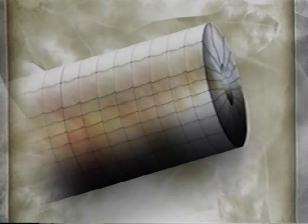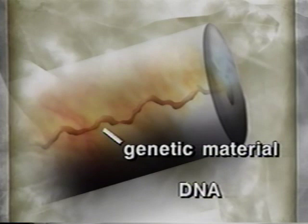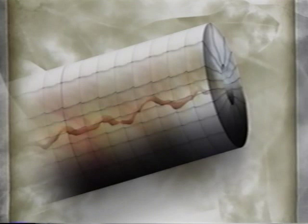No matter what their shape, all viruses have the same basic structure. Take the tobacco mosaic virus. Inside is a core that consists of genetic material. This may be either DNA — deoxyribonucleic acid — or RNA, ribonucleic acid. In the tobacco mosaic virus, the genetic material is RNA. Surrounding this core is a protein coat called a capsid. The capsid, in turn, is made up of smaller protein subunits called capsomeres.